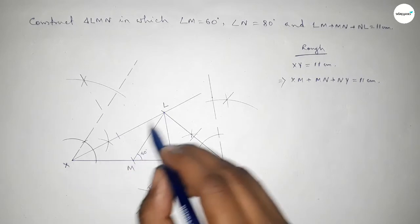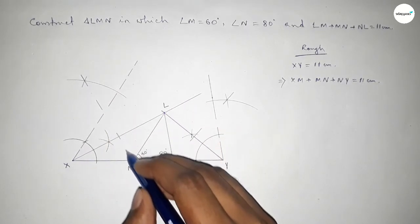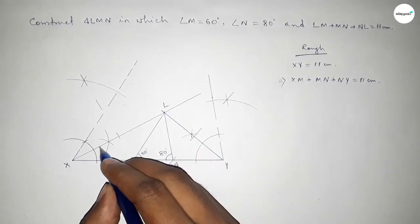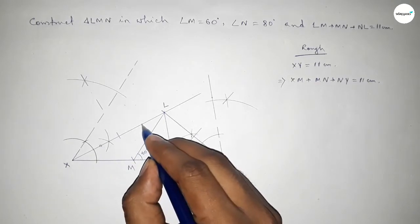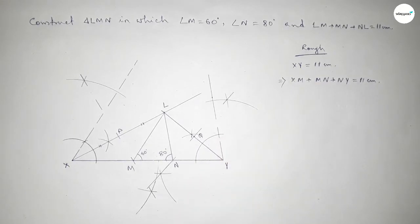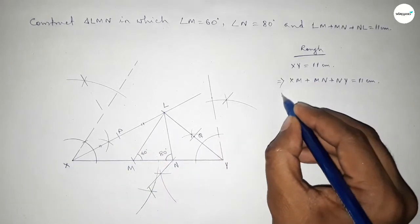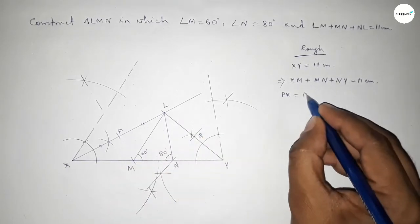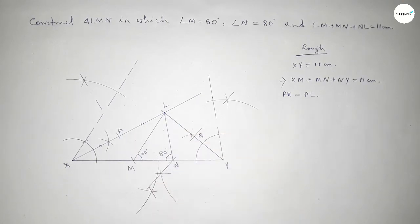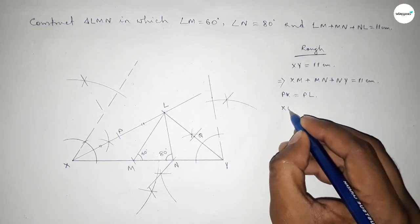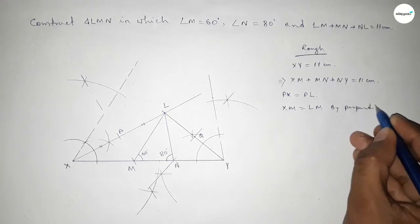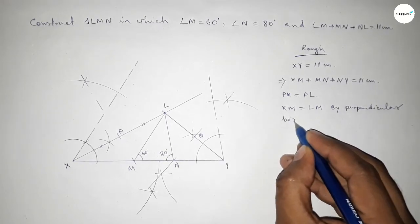The line LX is divided equally by its bisector, so taking point P on LX, the length PX equals PL. The perpendicular bisector of LX passes through M, so by the perpendicular bisector theorem, XM equals LM.